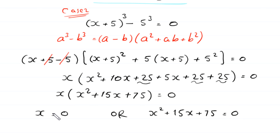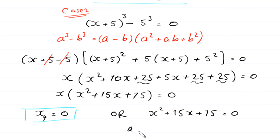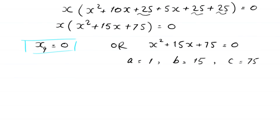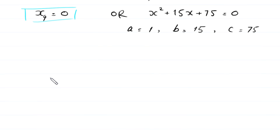From here, either x = 0, which is the fourth solution of this equation, or x² + 15x + 75 = 0. To find the other two solutions, we solve this quadratic equation using the quadratic formula with a = 1, b = 15, and c = 75.